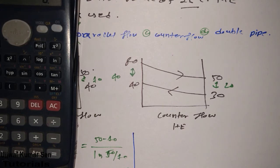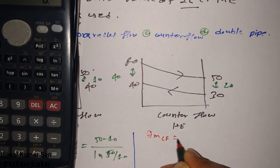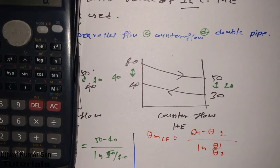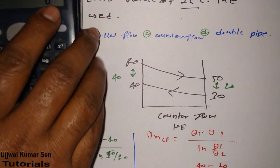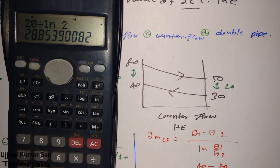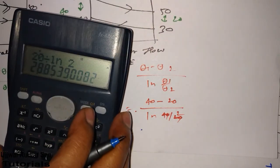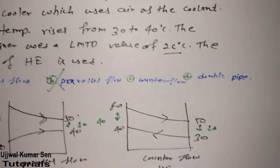Now for the counter flow heat exchanger, the formula is the same but theta 1 and theta 2 are different. Here theta 1 is 40 and theta 2 is 20. So theta_m equals (40 minus 20) divided by natural log(40/20) equals 20 divided by natural log(2). Using a calculator, this gives approximately 28.85 degrees centigrade. So counter flow is also not the exact option.